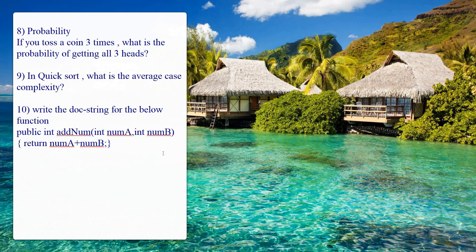The ninth question is: what is the average case time complexity of quicksort? In the answer, directly write the average case complexity. In the approach, write the worst case and best case complexities and then derive the average case.